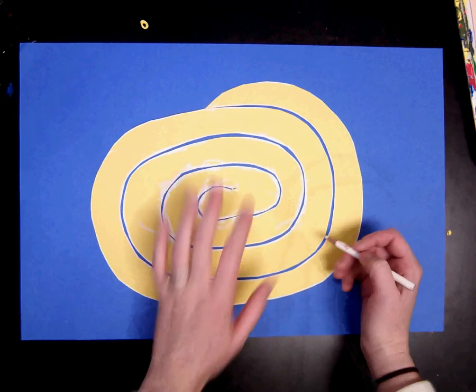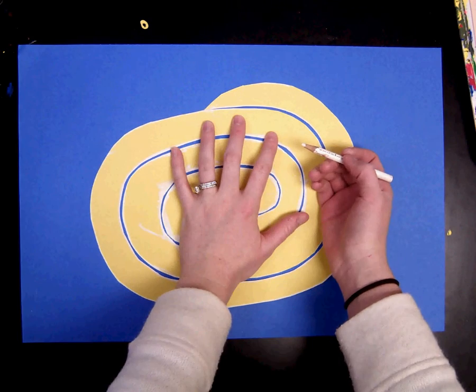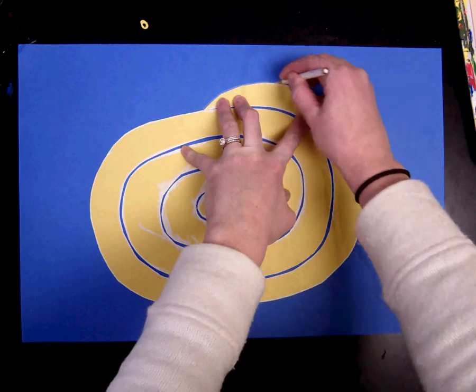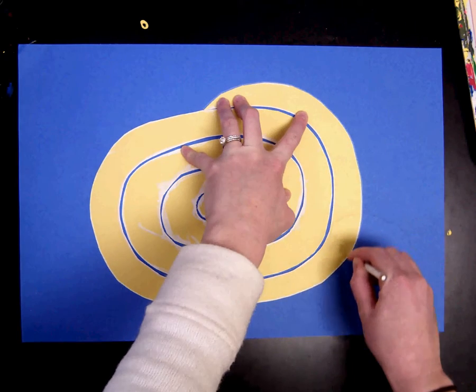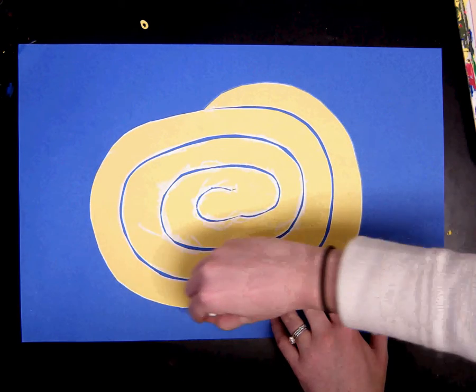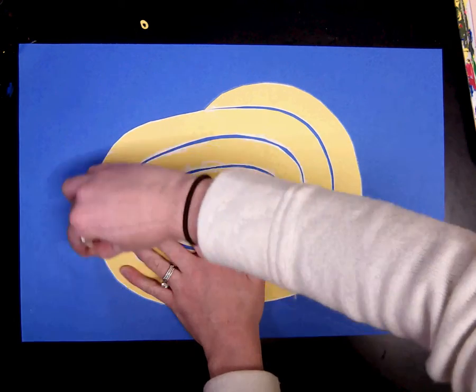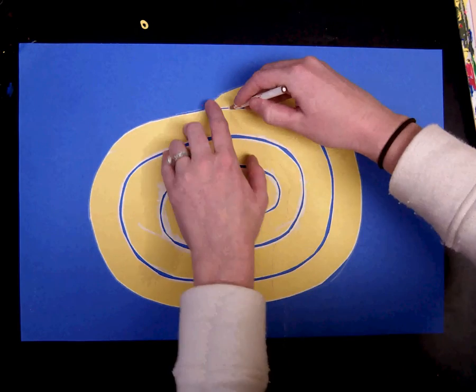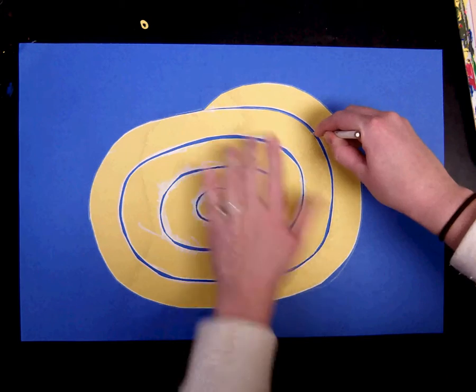I am right-handed so I'm going to hold it with my left hand and trace with my right, but because there's only two people that can use it at once maybe the person next to you can help you hold it. You want to do the outline and then you'll want to go in and do the lines inside your snake as well.